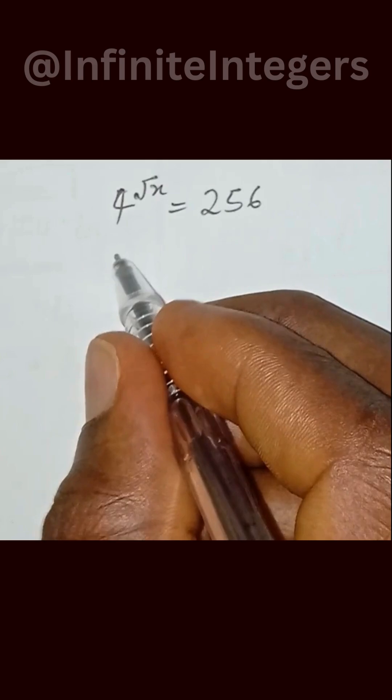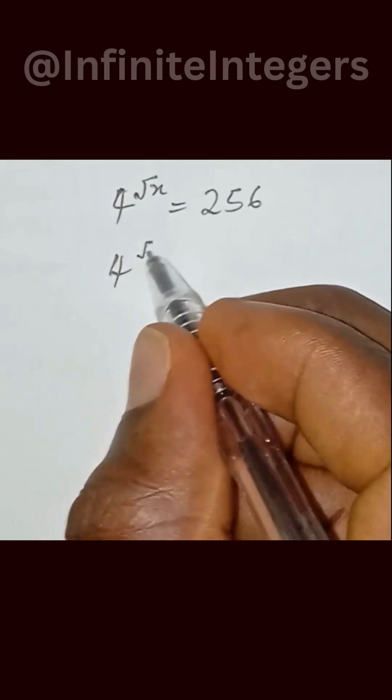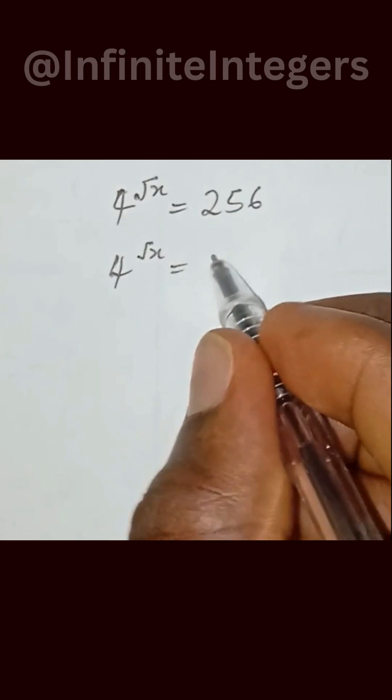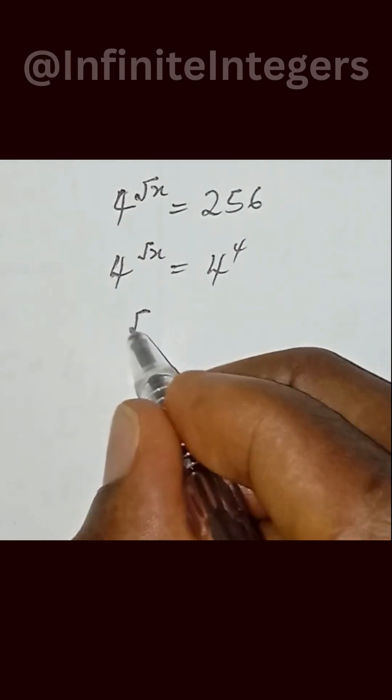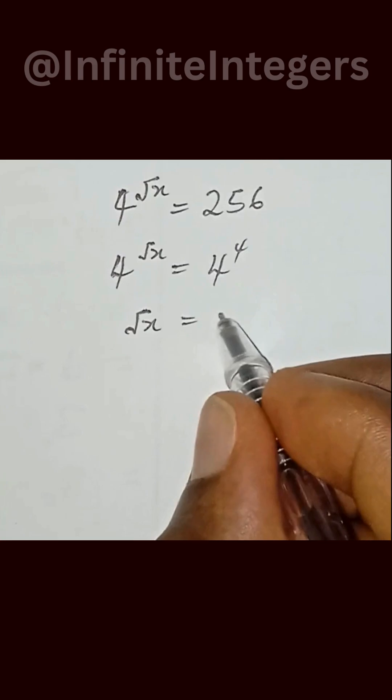So this is written as 4 to the power of square root x equal to 4 to the power of 4. Then we now equate the exponents. We have square root x equal to 4.